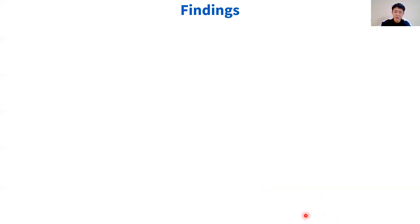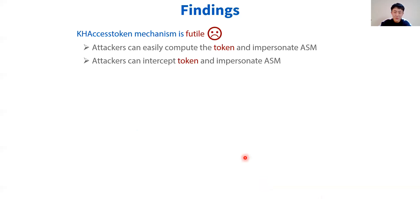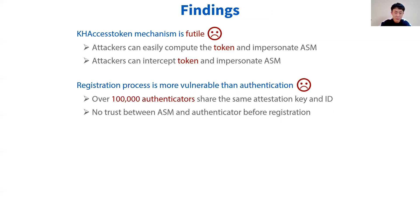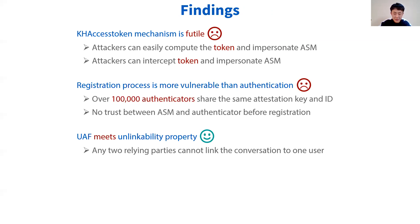Based on our minimal assumption results, we summarize some findings. When we assume there are malicious entities, the protocol cannot satisfy the confidentiality of some fields and some authentication goals. For instance, the UAF protocol uses the KHSS token mechanism for the authenticator to verify the ASM. However, we find this mechanism is futile and the attacker can easily compute the token and impersonate the ASM. Also, the registration process is more vulnerable than the authentication process; the attacker can target the registration process and control the user's account. We also find that the UAF protocol satisfies the linkability property — even if relying parties collude, they cannot distinguish whether their sessions are from the same user or not.